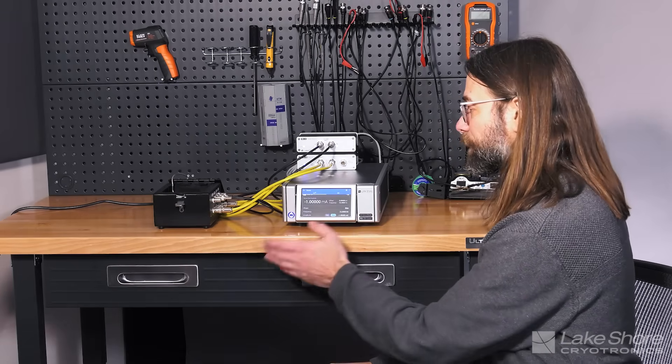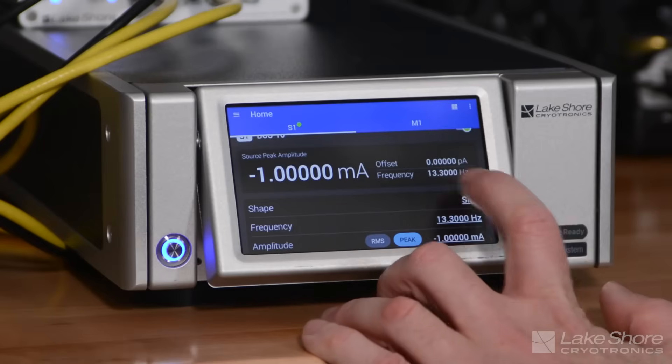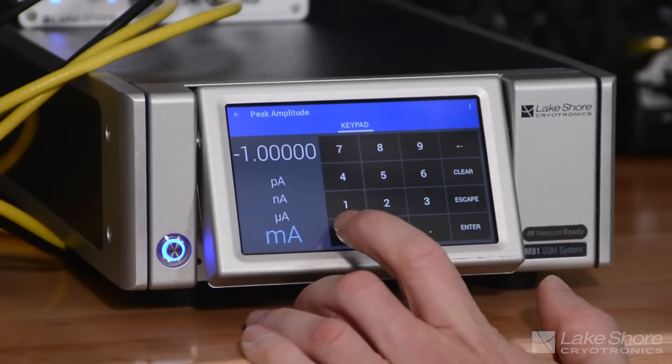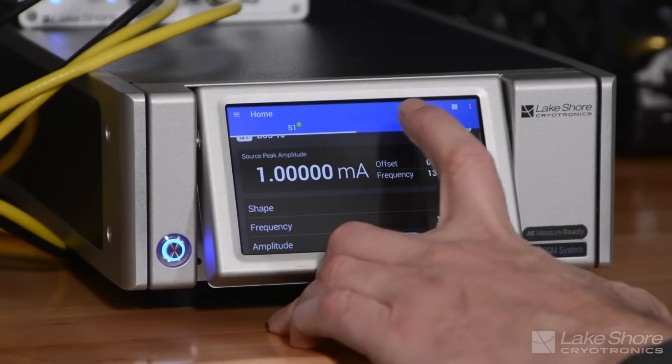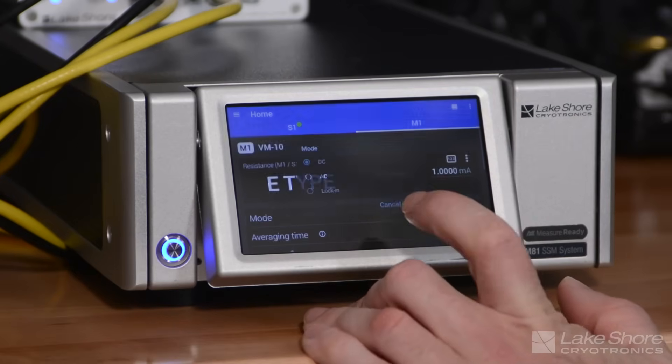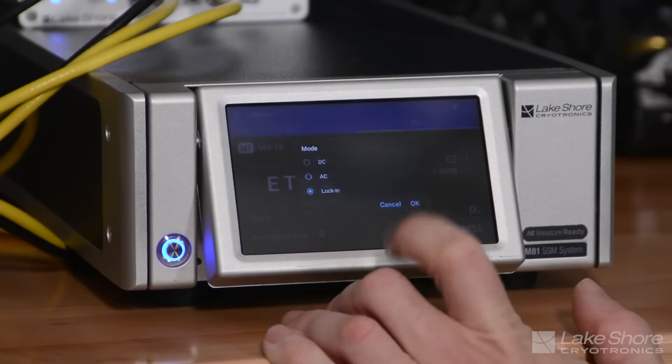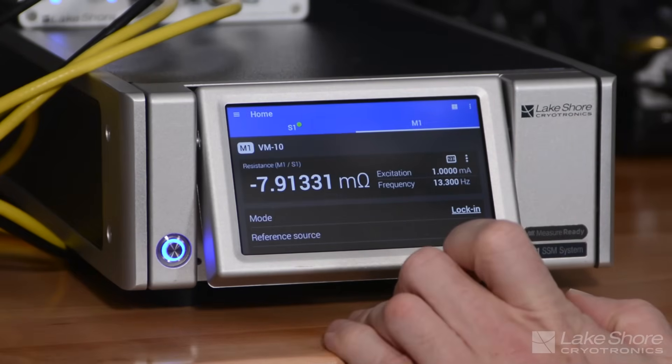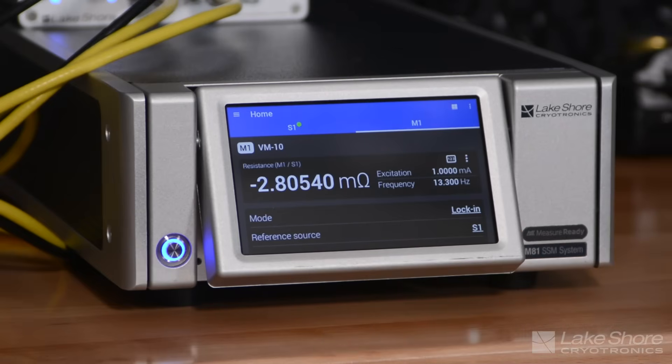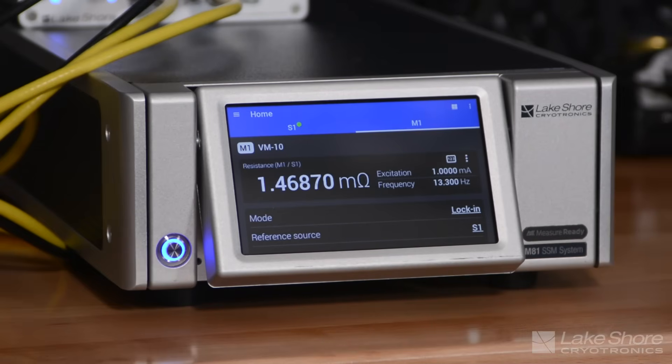So I've set up my source as a 13.3 hertz sine wave at 1 milliamp. Just change the polarity, even though it really doesn't matter. I'm going to change my measurement from DC to lock-in. And I'm just going to give it a little bit of time to settle. With a lock-in measurement, it does take some time based on the time constants and the filtering to get to a settled measurement.